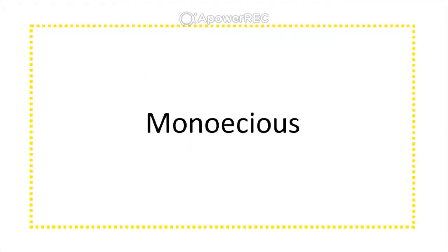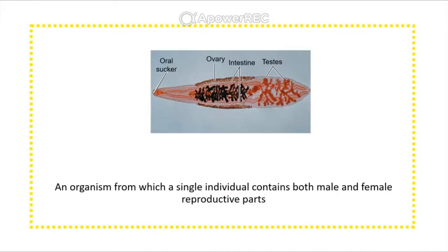Monoecious means 'one house' — within one organism there are both male and female reproductive parts.